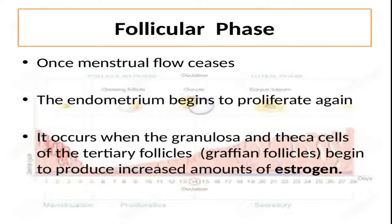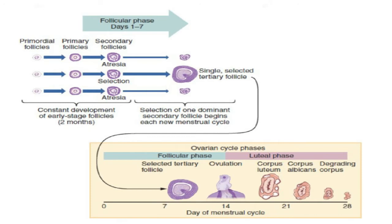The follicular phase is evident when the menstrual phase is coming to an end and the proliferative phase is starting, because as mentioned earlier, both cycles are overlapping and moving in parallel. In the follicular phase, three primordial follicles differentiate into primary follicles and then into secondary follicles. Only one of the three secondary follicles is eventually selected for further differentiation.